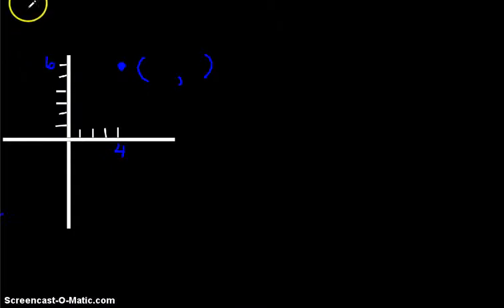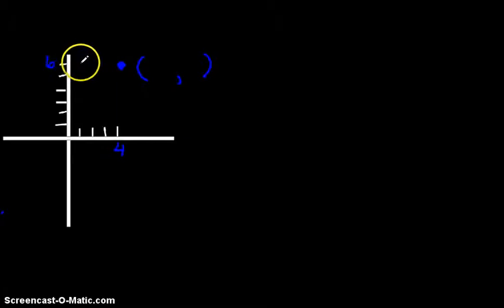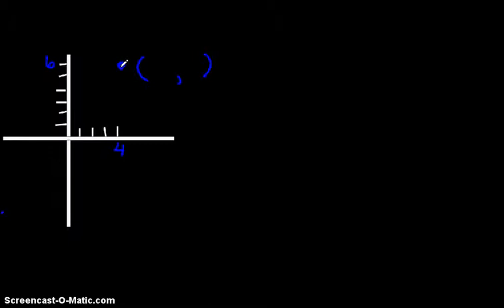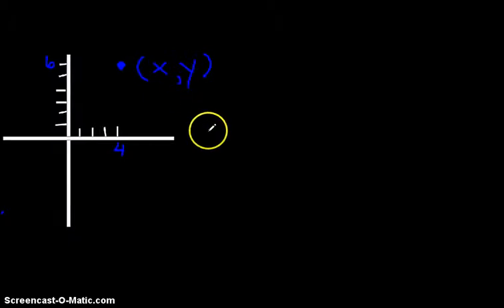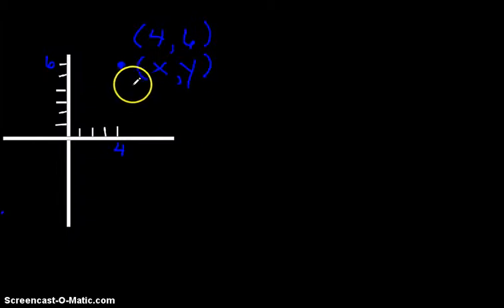Today we are going to look at a new way to describe the location of a point. Normally we are used to describing it in an XY manner on a Cartesian plane, where this point would be described as the point four, six.